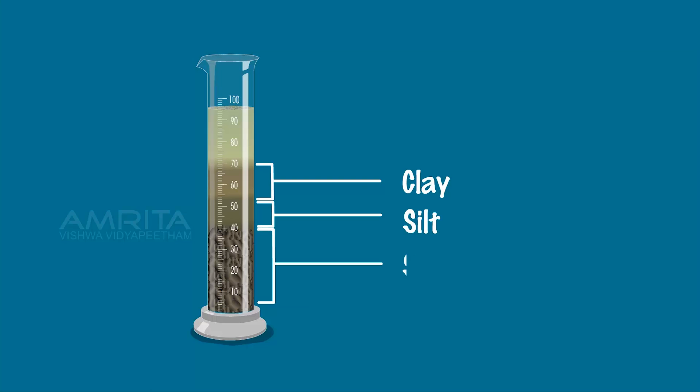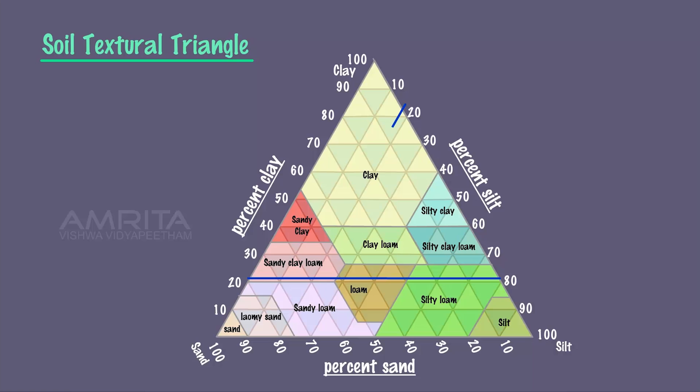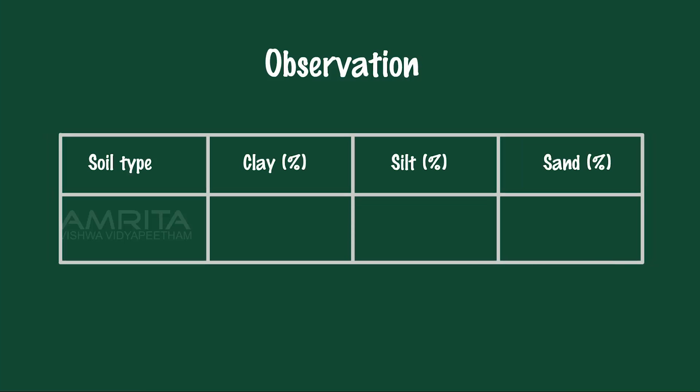The thickness of clay particles in measuring cylinder is 21%, silt particles is 18%, and sand particles is 61%. Using a textural triangle, draw lines corresponding to the percentage of clay, silt, and sand. The lines which intersect indicate the soil type we have. Here, the sample soil consists of 21% clay, 61% sand, and 18% silt. Hence, the soil type is sandy clay loam.